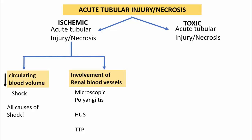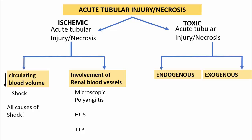Moving on to the toxic type of acute tubular injury, the causes can be endogenous or exogenous toxins. The most common endogenous toxins are myoglobin and hemoglobin — whenever there is excess myoglobin as in cases of severe muscle injuries, these can result in toxic damage to the tubules. The most common exogenous causes are drugs such as aminoglycoside antibiotics like gentamicin and amphotericin B, radiocontrast dyes, organic solvents like carbon tetrachloride or ethylene glycol, and even radiation.